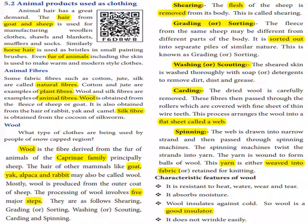Animal hair has great demand. The hair from goat and sheep is used for manufacturing woolen cloths, shawls, blankets, mufflers and socks. Similarly, horse hair is used as bristles in small painting brushes.